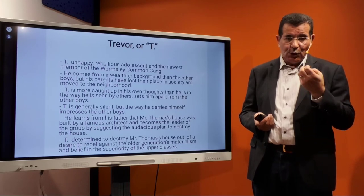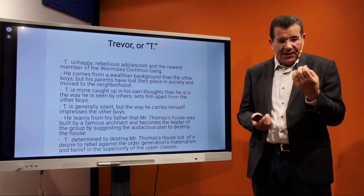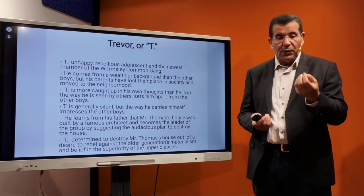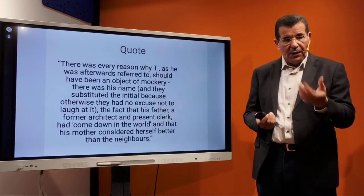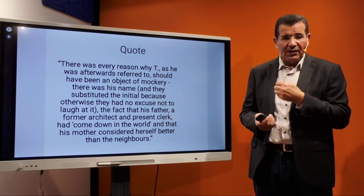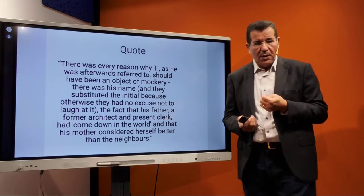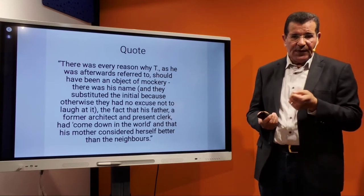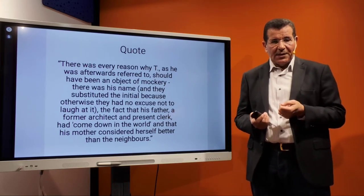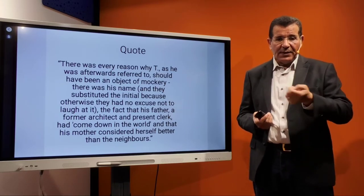T has a strong determination to destroy the house, which symbolically represents a desire to rebel against the older generation, materialism, and belief in the superiority of the class to which Mr. Thomas belongs. There is a quote: 'There was every reason why T, as he was afterwards referred to, should have been an object of mockery — there was his name, and they used only the initial because otherwise they had no excuse not to laugh at it. The fact that his father, a former architect, had come down in the world, and that his mother considered herself better than the neighbors.' The irony is that T's father is an architect, while Mr. Thomas is a builder and decorator.